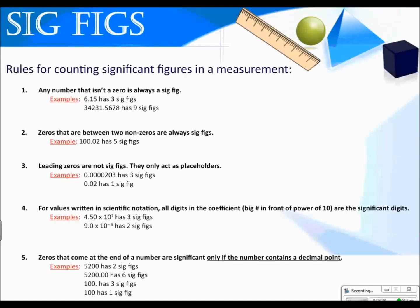Rules for counting significant figures in a measurement. The question about significant figures is: when do we count zeros or not? Any number that isn't a zero is always significant — numbers like one through nine. For example, in the number 6.15, all three digits are significant because none of those are zeros. And in the number 34,231.5678, it has nine digits, none of which are zeros, so all nine are significant figures.